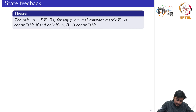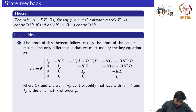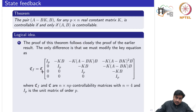Recalling important results from the single variable case: for the multivariable case, for any P×n real constant matrix K, the closed loop pair is controllable if and only if the original pair is controllable. This is the key result and the starting point. If the original pair is not controllable, we cannot ensure that the closed loop pair would also be controllable.